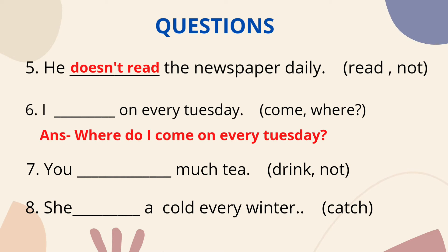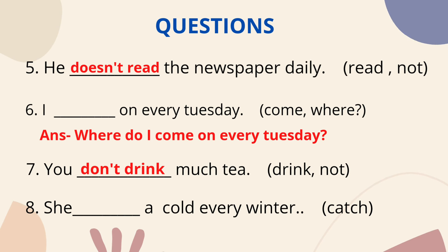Question no.7: 'You ___ much tea.' We need to make a negative sentence using the verb 'drink.' First, positive: 'You drink much tea.' To add 'not,' we need a helping verb — with 'you,' we use 'do.' So the answer is: 'You don't drink much tea.'